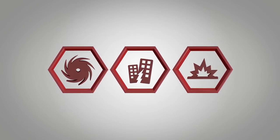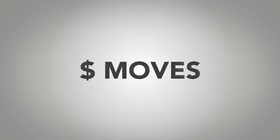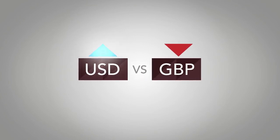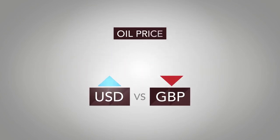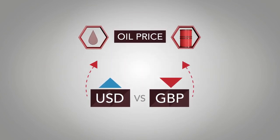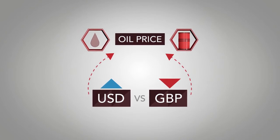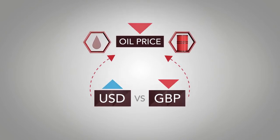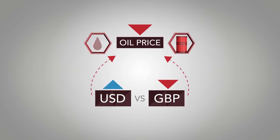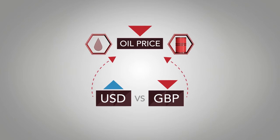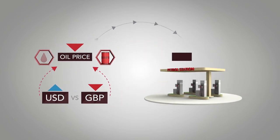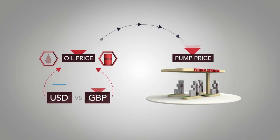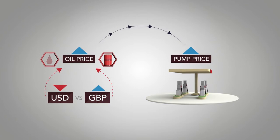With oil being priced in US dollars, a move in the foreign exchange markets will have an effect on demand through price action. A stronger US dollar against sterling pushes down the cost of oil for us here in the UK. This, assuming all other factors are unchanged, will feed through to prices at the pump. A weaker dollar has the opposite effect.